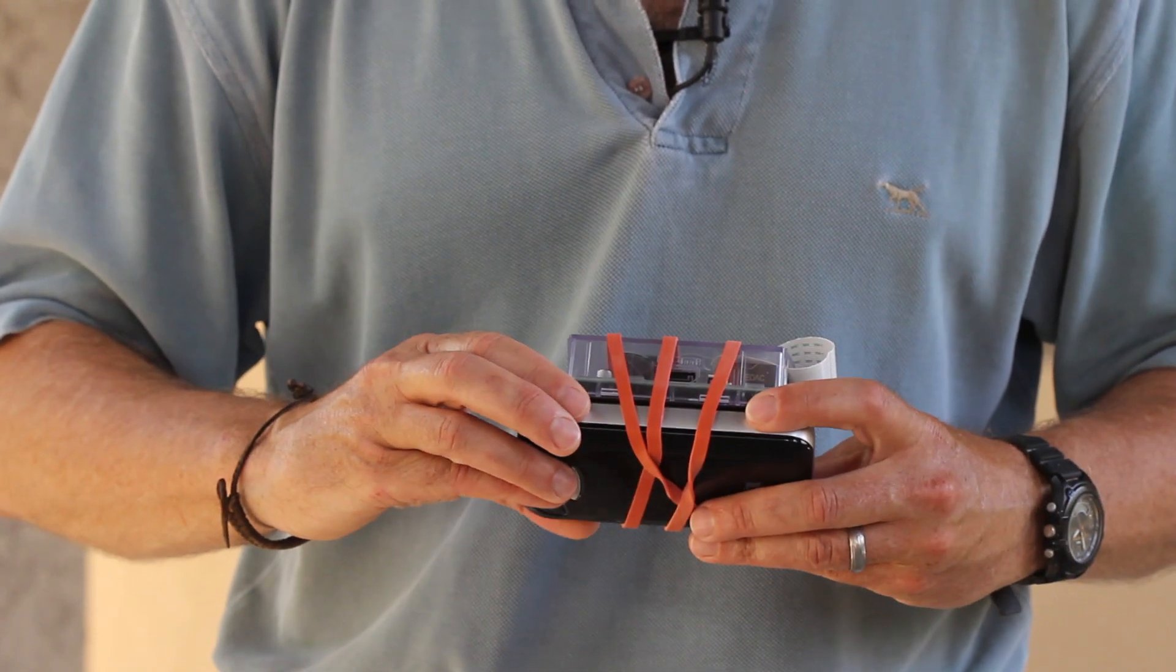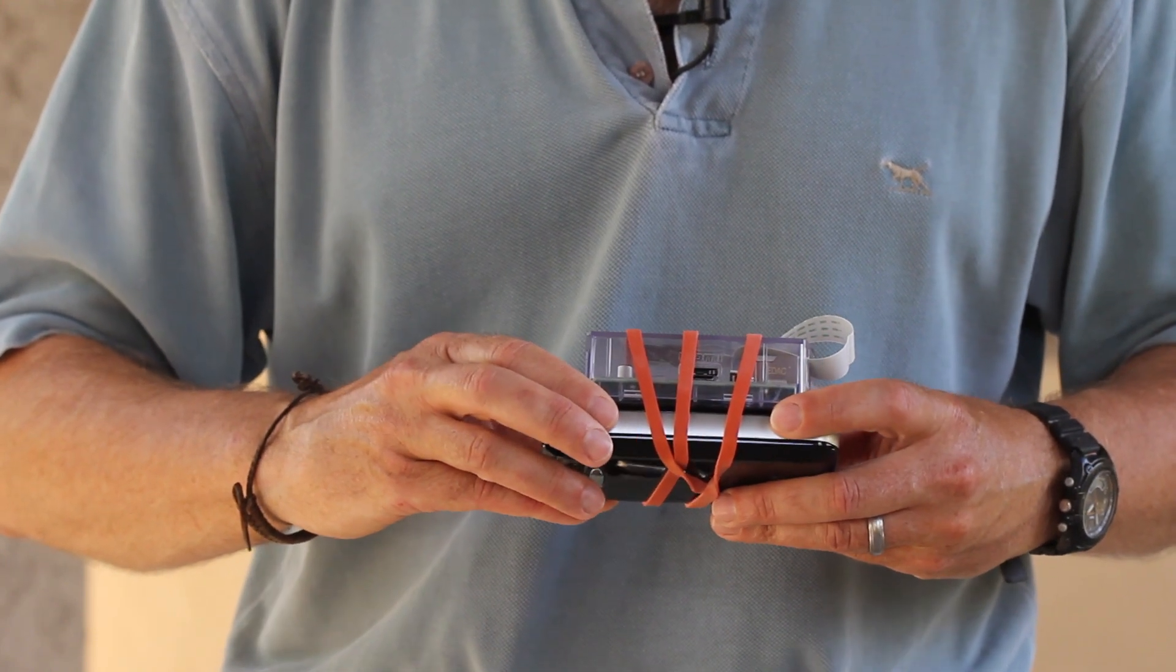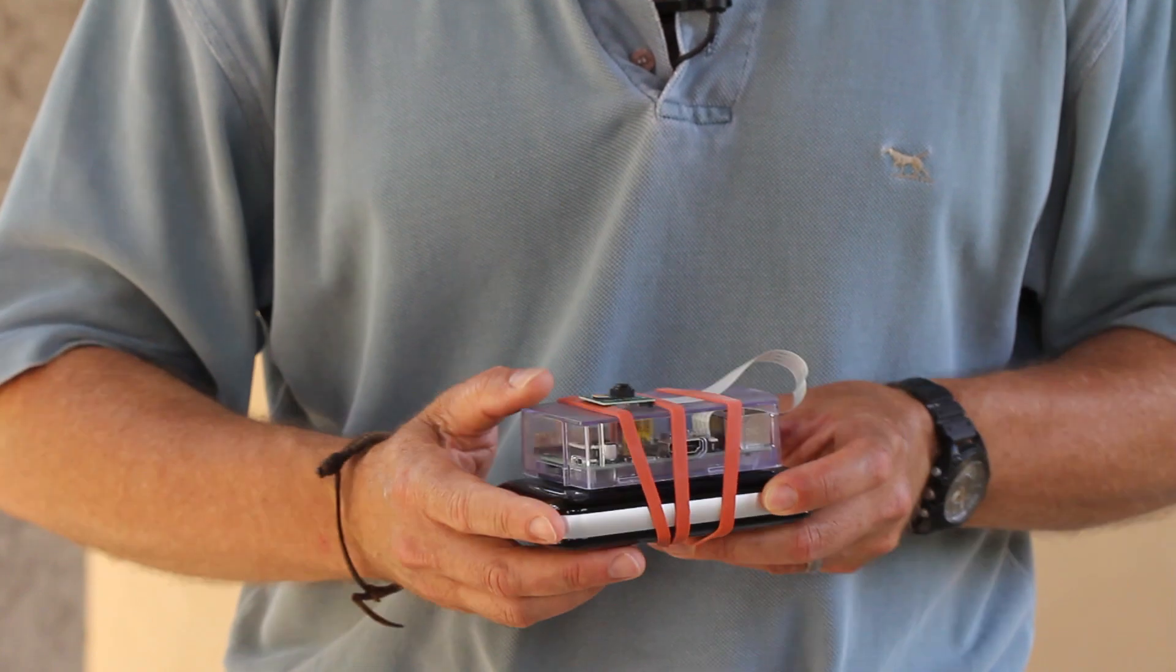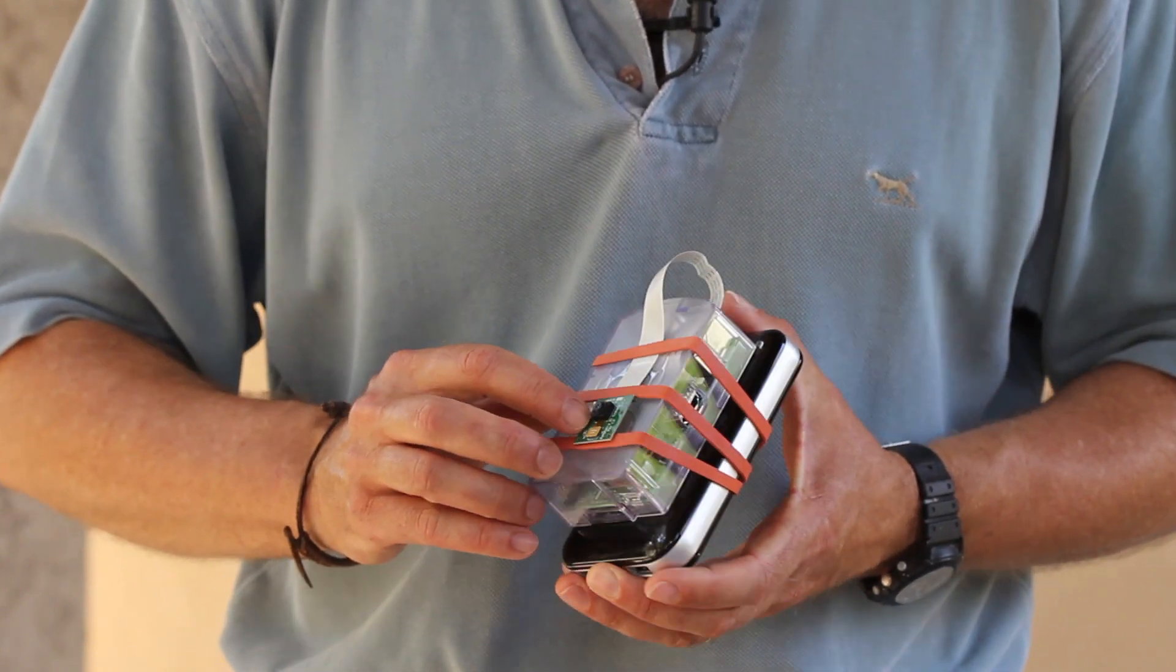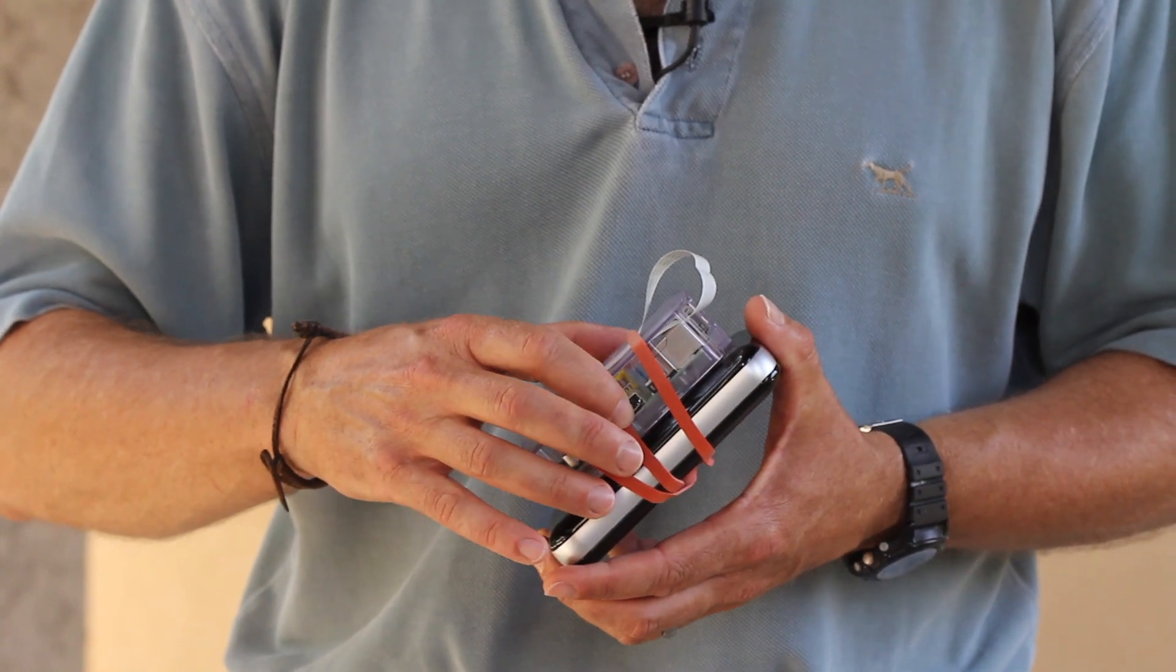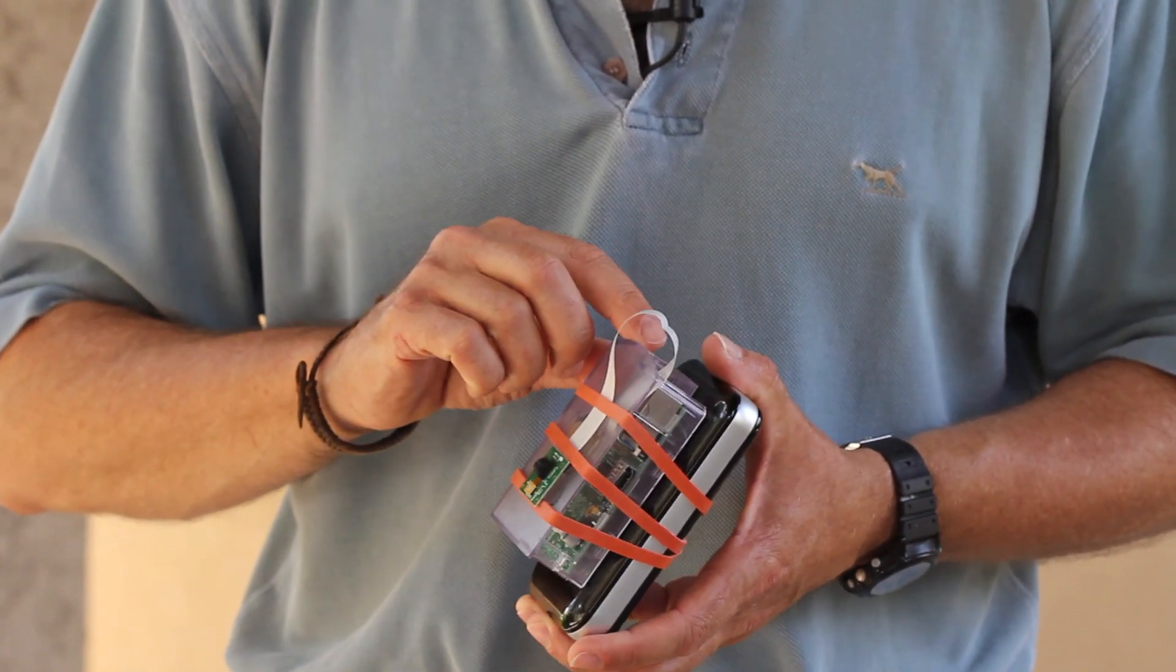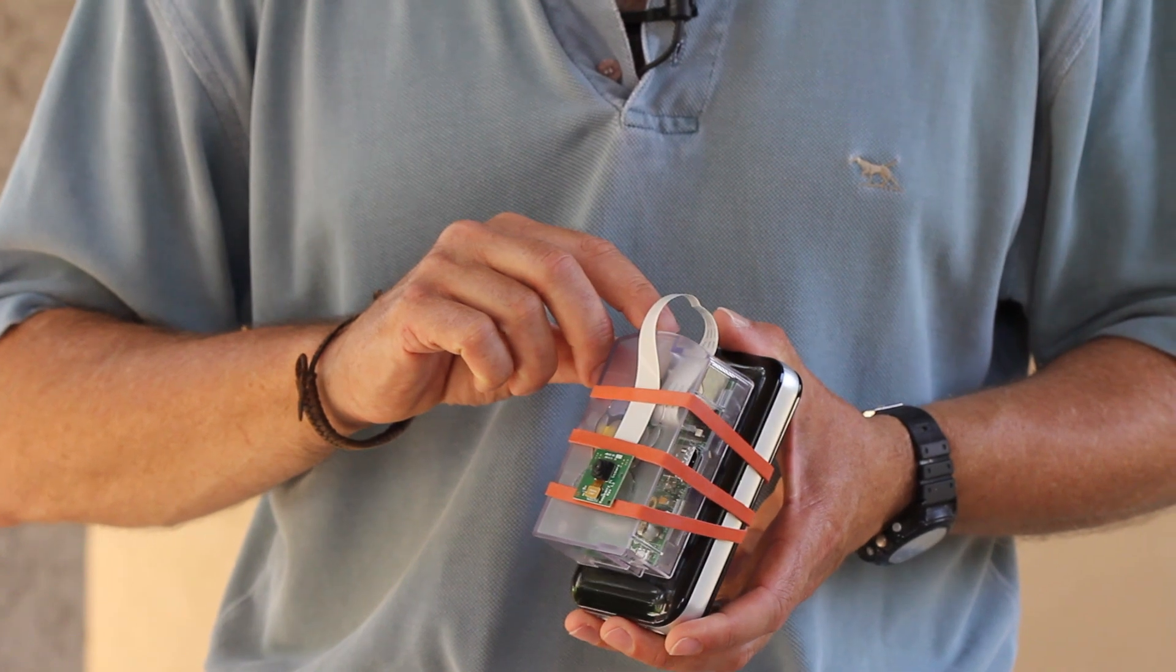The computer hardware is contained in this plastic box, and it's the Raspberry Pi hardware that operates the camera. We have an external battery pack which can run the entire unit. The camera captures ant activity, that digital data is processed here in the Raspberry Pi unit, and then those data are exportable to a USB drive.